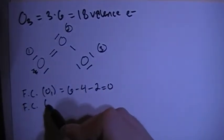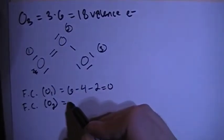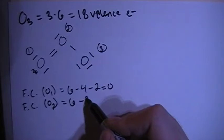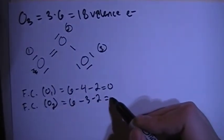Formal charge of oxygen 2, which is the top one here, is going to have 6 valence brought in, minus 3 bonds, minus 2 non-bonding electrons, which is going to give us a formal charge of plus 1.